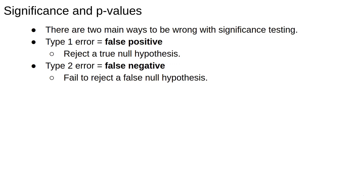A type 1 error, also called a false positive, is where we reject a true null hypothesis. A type 2 error, also called a false negative, is where we fail to reject a false null hypothesis.